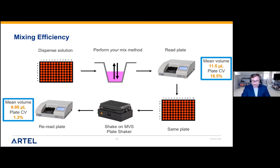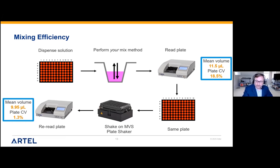To put this in context: evaluating two plate reads takes about four minutes total. If you were running an actual assay and needed to change your mix method, that would take however many adjustment iterations multiplied by however long the assay runs — and most assays aren't done in a couple of minutes. By evaluating only the mix step here, if the mix isn't working, it's going to be even more challenging when a biochemical reaction is taking place.